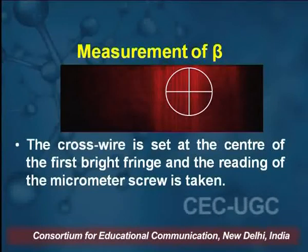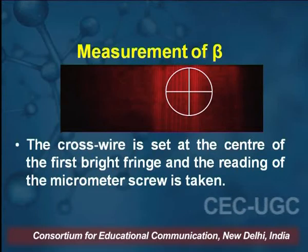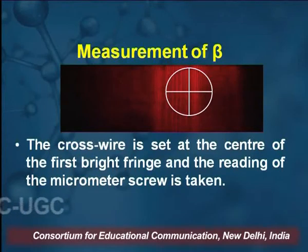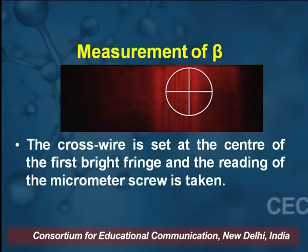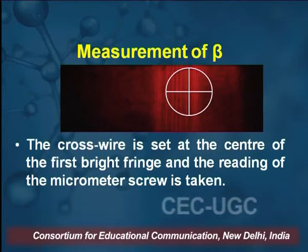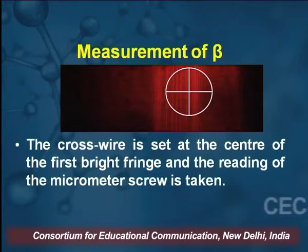How do we calculate beta? We calculate lambda using the formula: lambda equals beta times 2D divided by capital D. Beta is the fringe width — the distance between two maxima or minima. We also calculate 2D, which is the distance between the two virtual sources, and capital D, the distance between the slit and the eyepiece. To calculate beta, a cross wire from the eyepiece is placed on a fringe, and the main scale and vernier scale readings are taken after calculating the least count.